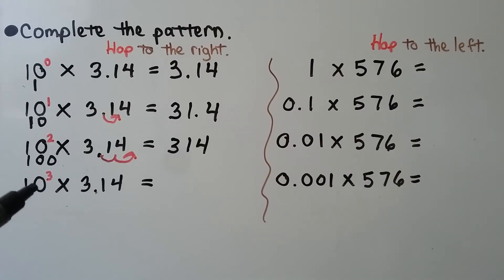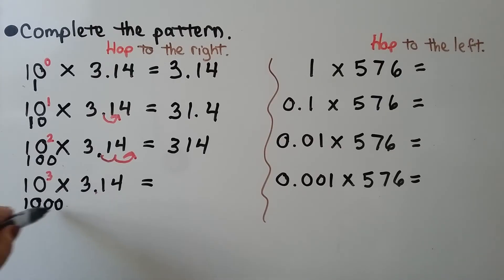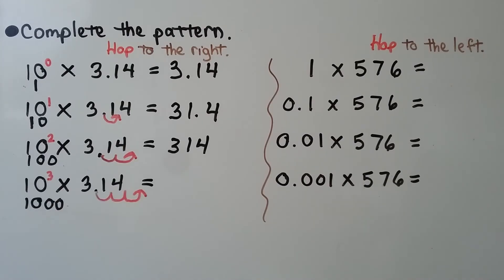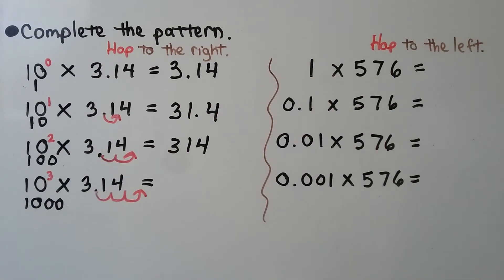Now we have 10 to the third power — that means ten times ten times ten — that's one thousand. We have three zeros, so we're going to move the decimal point three hops to the right. We have an empty space here for the third hop, so we can put a zero there as a placeholder when we write the product. The product is three thousand one hundred forty.